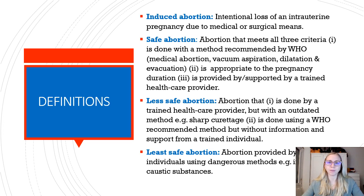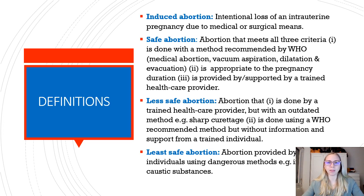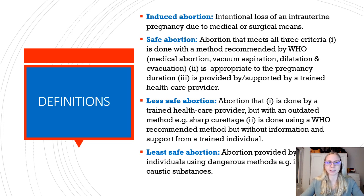Less safe abortion, on the other hand, is abortion that is done by a trained health care provider but with an outdated method — for example, sharp curettage — or it is done using a WHO recommended method but without information and support from a trained individual. Finally, least safe abortion is abortion provided by an untrained individual using dangerous methods, for example, ingestion of caustic substances.